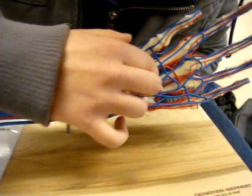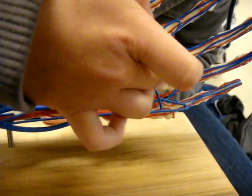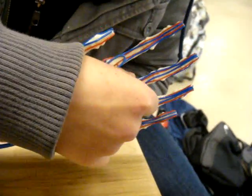This is your deep palmar arch and this is your superficial palmar arch. This is your palmar metacarpal arteries. Then it goes to your common palmar digital and then your proper palmar digital arteries and then the veins.